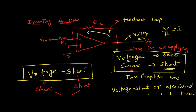There are two things: first, understand how the feedback is driven. Since this is a V0 output, we are taking output voltage. Hence the name — we are taking voltage. We are applying it as a current, so voltage shunt. That is how you identify the feedback topology of an amplifier.